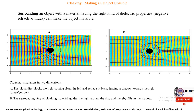There are special applications where we can make an object invisible. This is possible by surrounding an object with a material having the right kind of dielectric property — specifically a negative refractive index. Scientists are trying to commercialize this especially for defense purposes, as it has a wide range of interesting applications.